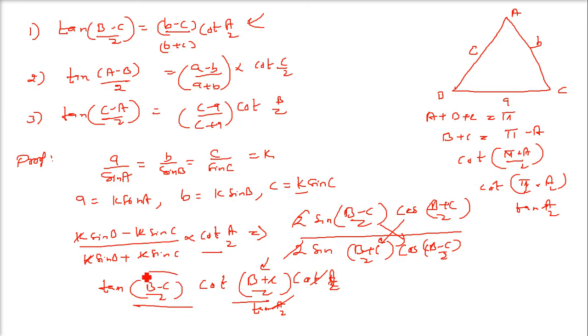Only this will remain. And this is your left hand side. So this is how you prove it. You can prove it for this one also, this one also. So this is your Napier's analogy or law of tangents.